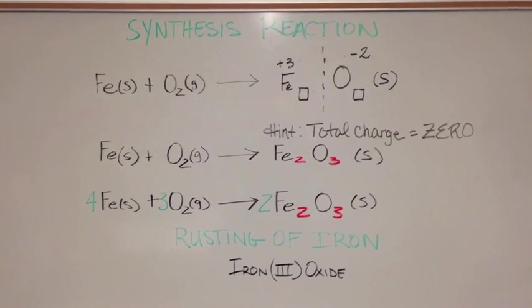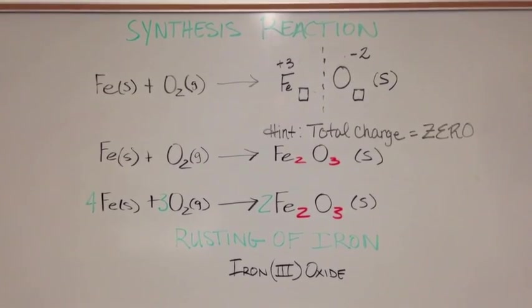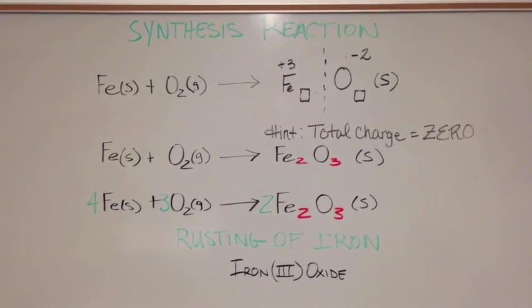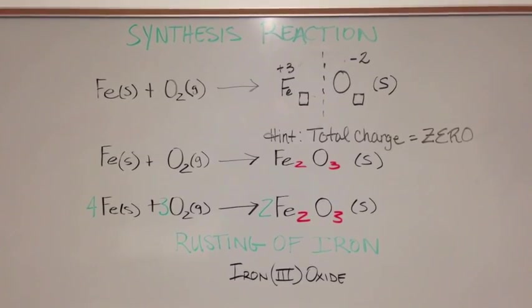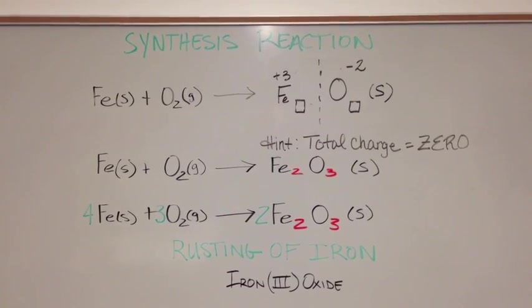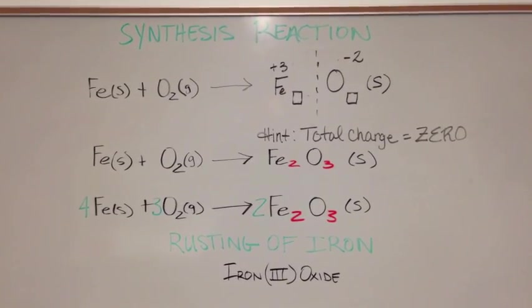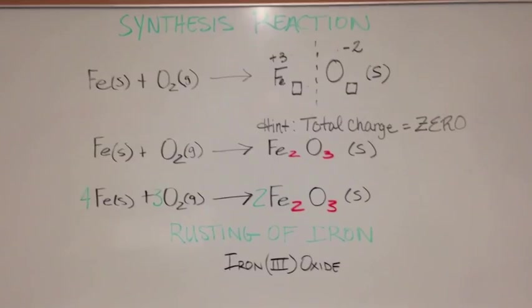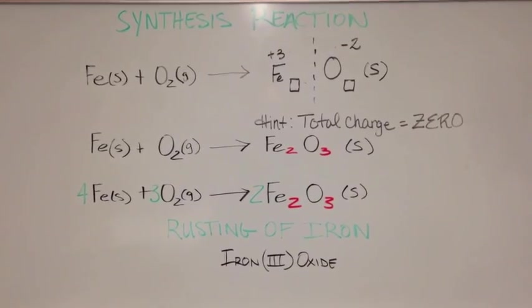The first step in a synthesis reaction is to take the reactants Fe and Oxygen and predict the products, which will be Iron(III) Oxide. The first step, we need to identify the charges of the products and use the criss-cross method.